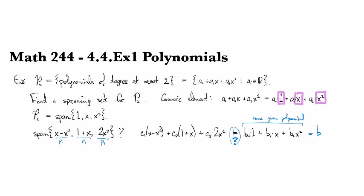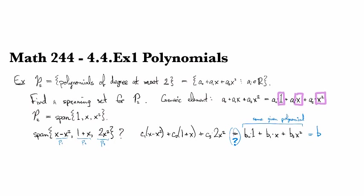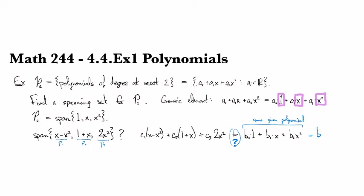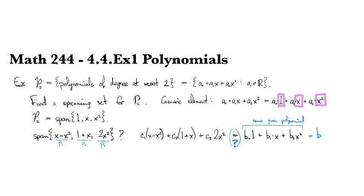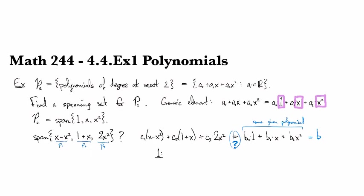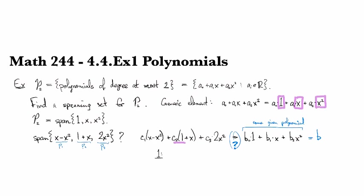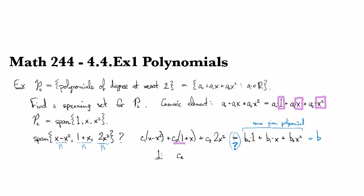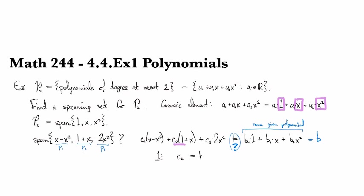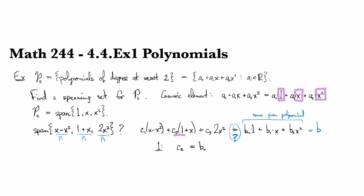Well, let's see. So if this equation were solvable, then I could collect the coefficients of like terms. So if I look at the constant term on the left, we have one coming up right here. So we have c2 and that's the only one I see. Meanwhile, on the right, we have b0.